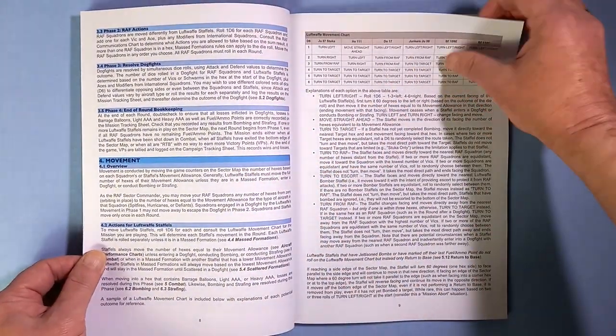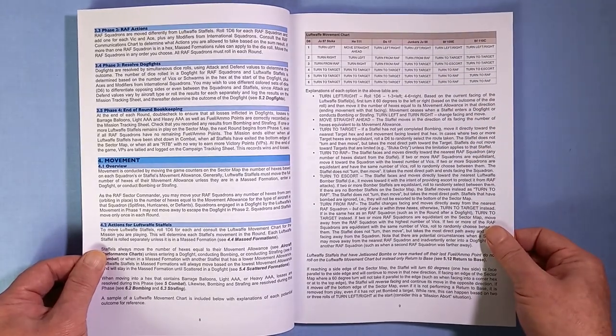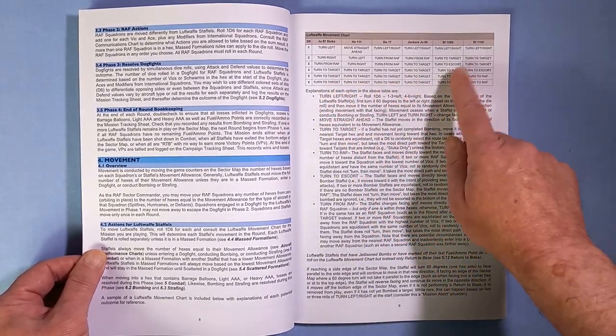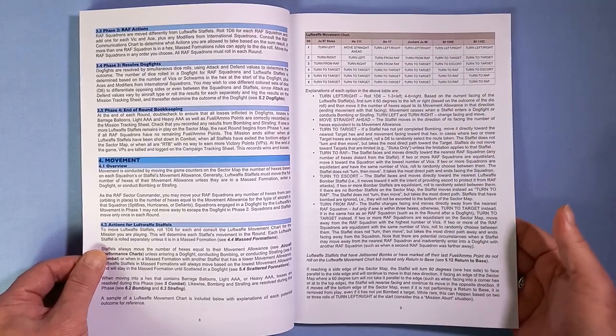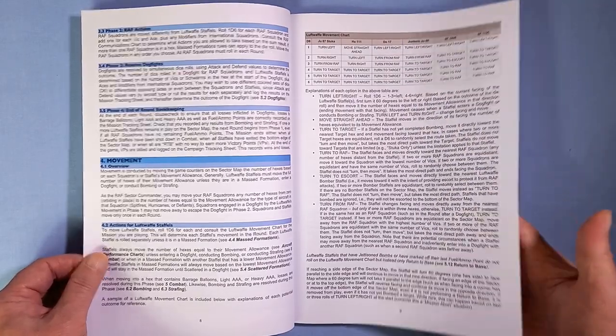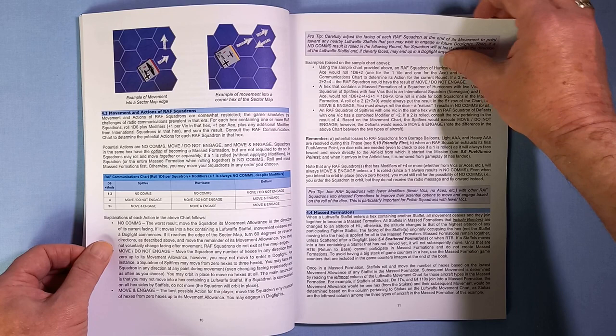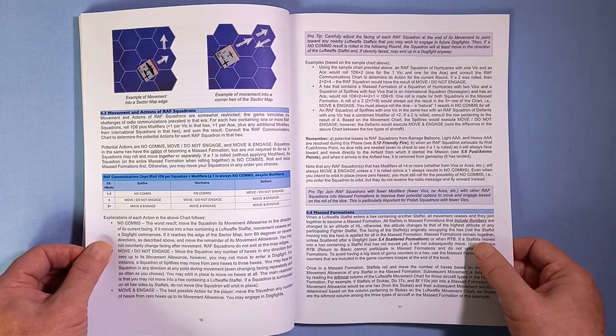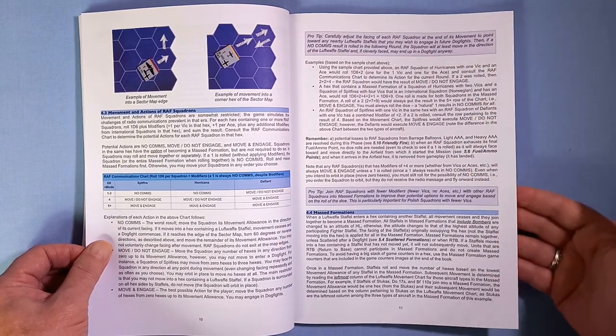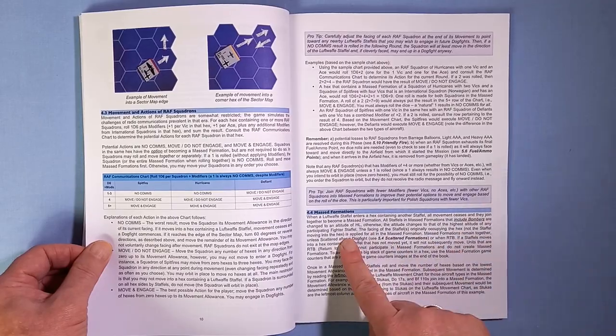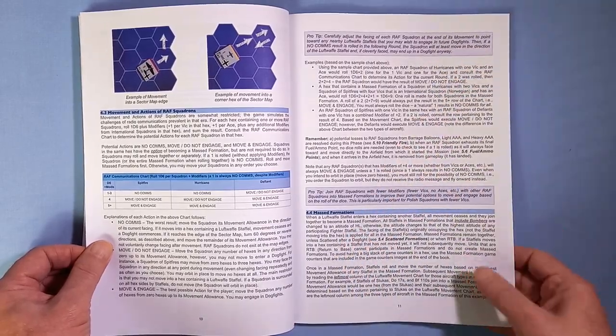How to move. And that again for the Germans is done by a movement chart. Movement and actions of your RAF squadrons. Massed formations can form for both sides.